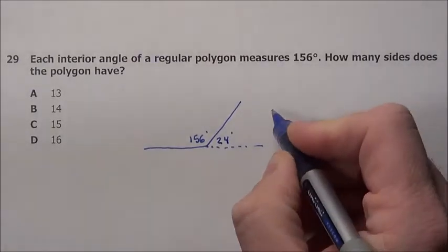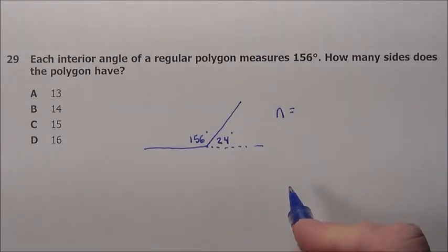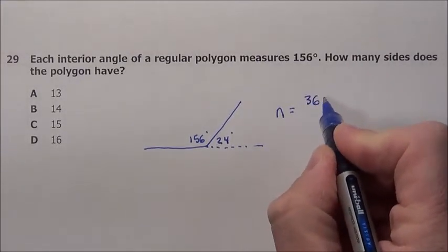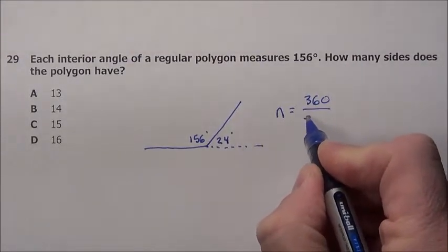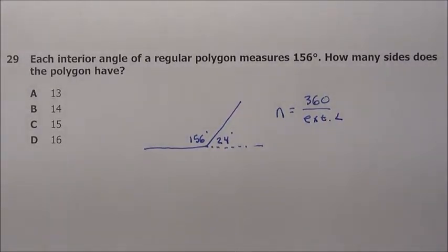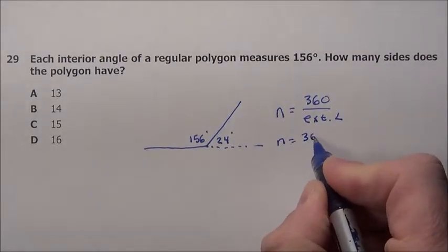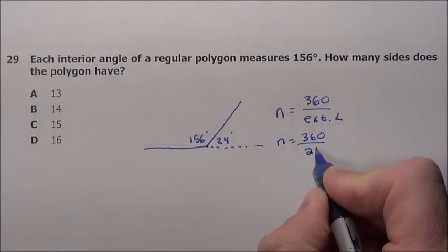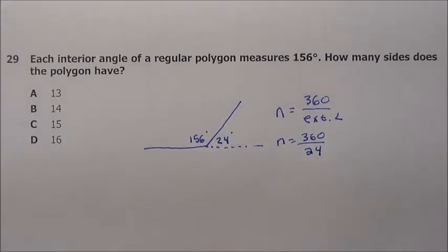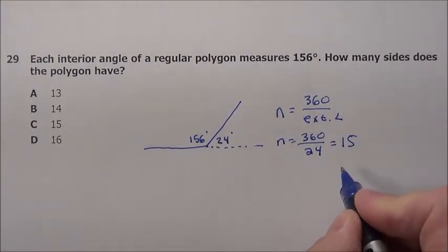The reason we like that is because there's that very simple formula, the number of sides of that regular polygon is simply 360 divided by whatever the exterior angle is. Well, the exterior angle is 24, so the number of sides is 360 divided by 24. 360 divided by 24, 15.